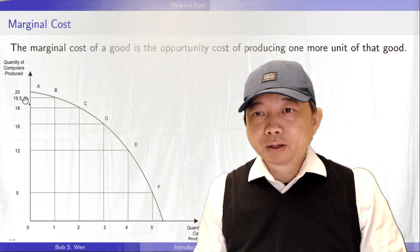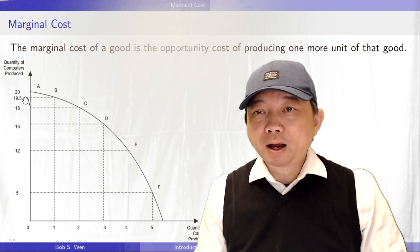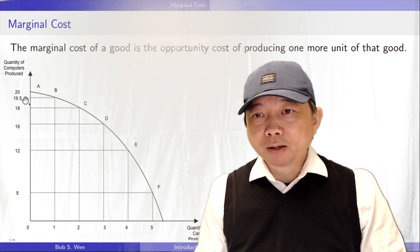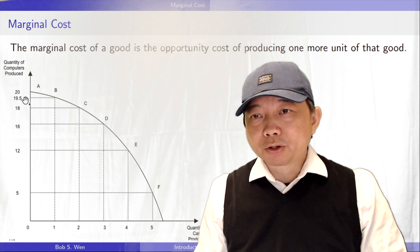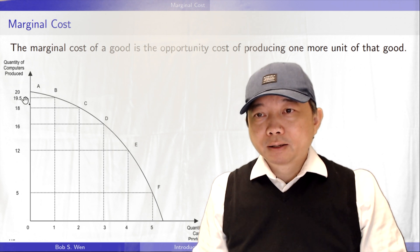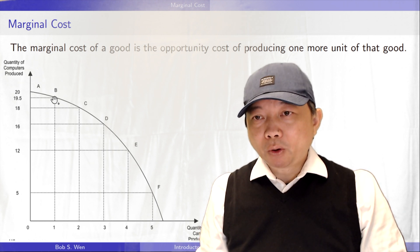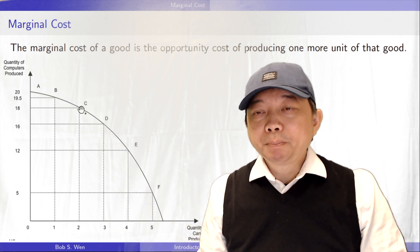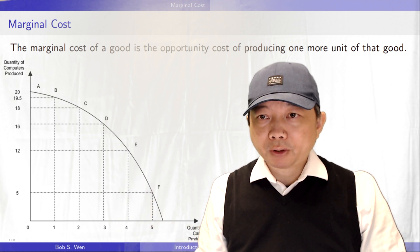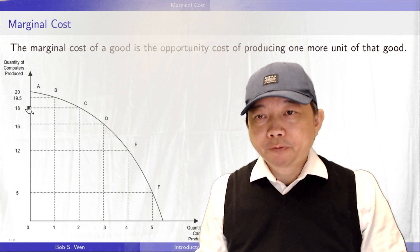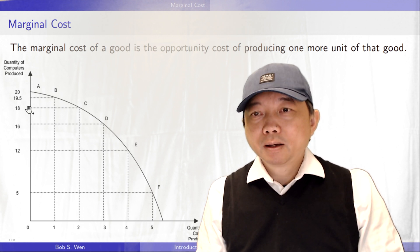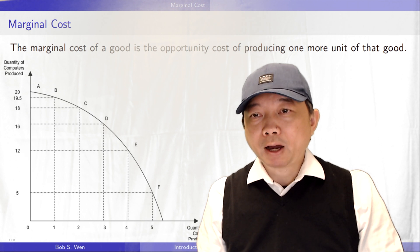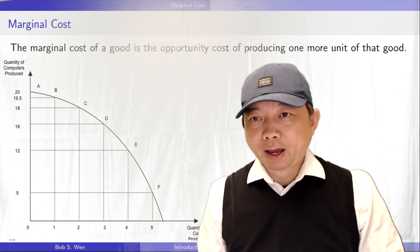Marginal cost is not constant as more cars are produced. It's important to point out which point we are discussing. As we produce one more car from 1 to 2, we have to give up 1.5 units of computers from 19.5 to 18. The marginal cost of producing one more car is 1.5 units of computers at that point.